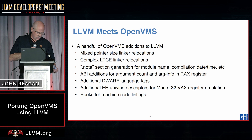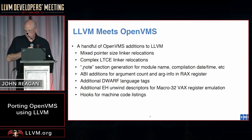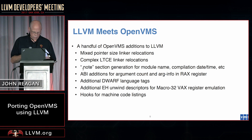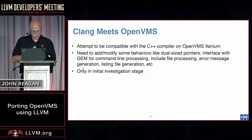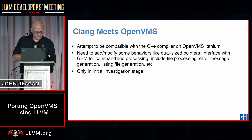We've also added a machine code listing file which includes source code, macro expansions, and general machine code — essentially a collection of everything that's used. For Clang, we'll have to add a lot of VMS-specific support to it. We haven't started yet; we've been talking about it.